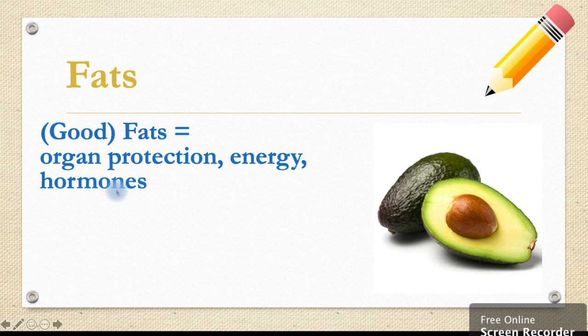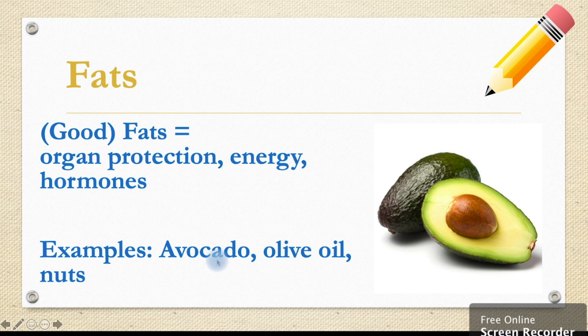Finally, we have fats. We're going to focus on the good fats. These assist with organ protection, energy and hormone production. Examples include avocado, olive oil and nuts.